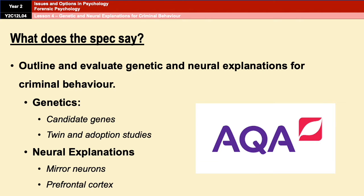Just so that you know what the specification says you need to know about: you need to be able to outline and evaluate genetic and neural explanations for criminal behaviour. That means we are going to be looking at candidate genes and twin and adoption studies as part of the genetic element, and then for the neural element, we are going to be looking at the role of the prefrontal cortex and the role of mirror neurons as well.